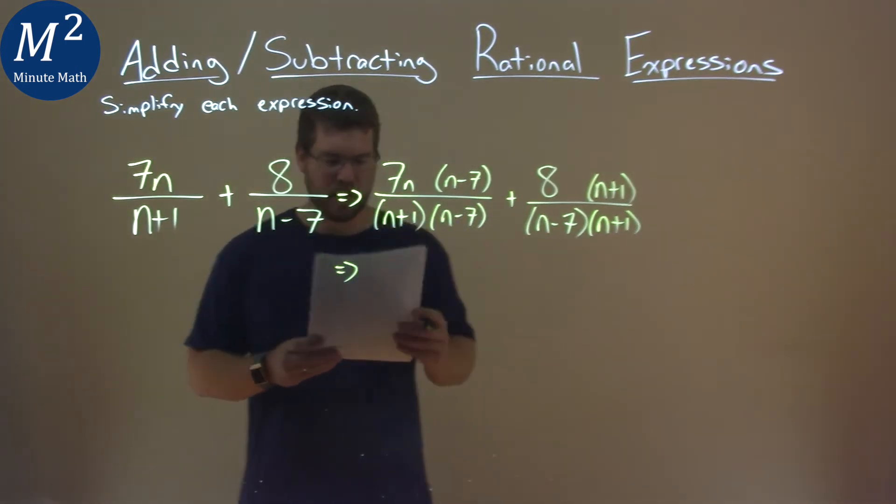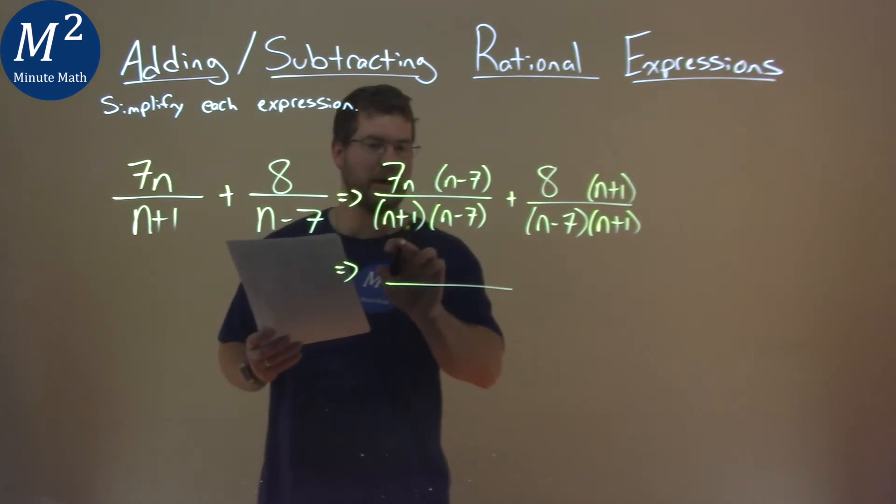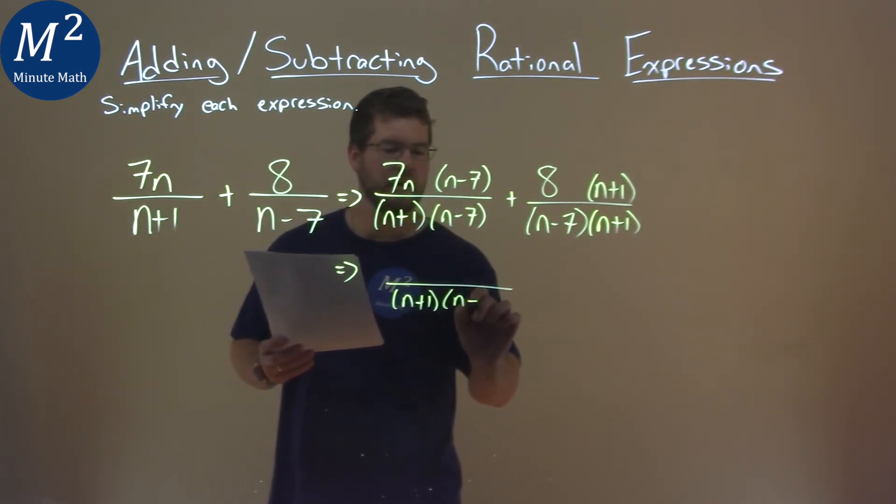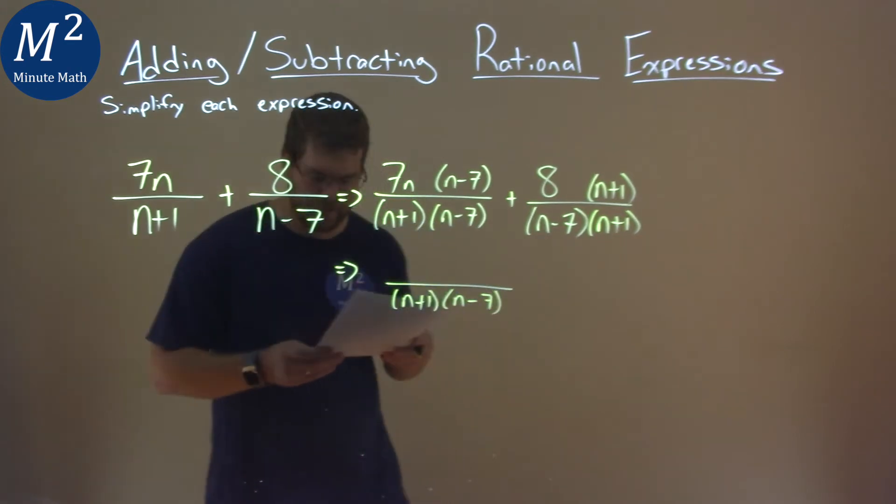we're going to combine the same base, right? We have an n plus 1 and n minus 7. We can write this as one fraction: n plus 1 times n minus 7.